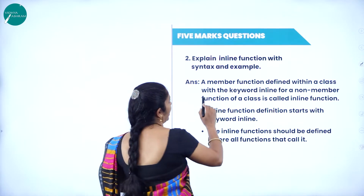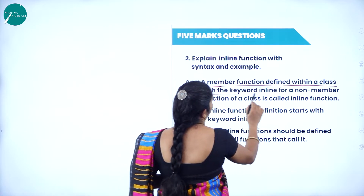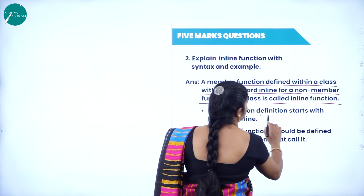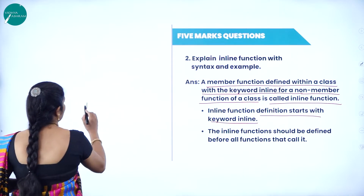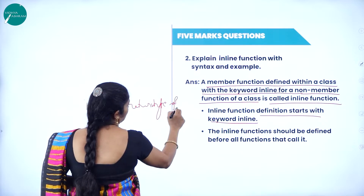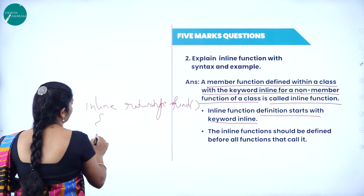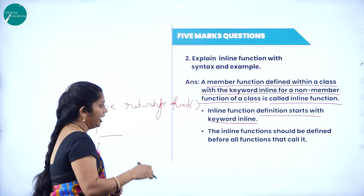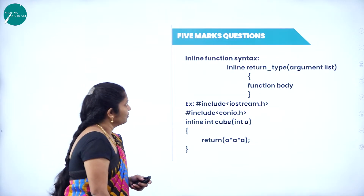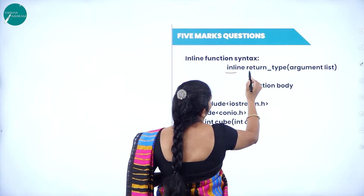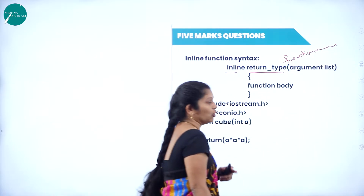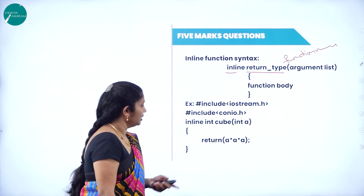A member function defined within a class with the keyword inline, or a non-member function of a class, is called an inline function. Inline function definition starts with the keyword inline compulsory. Then we write the return type specifier, then the function name, then arguments, then the statements. Inline function should be defined before all functions that call it. The syntax: write inline, then return type, then function name, then the argument list, then the body of the function.